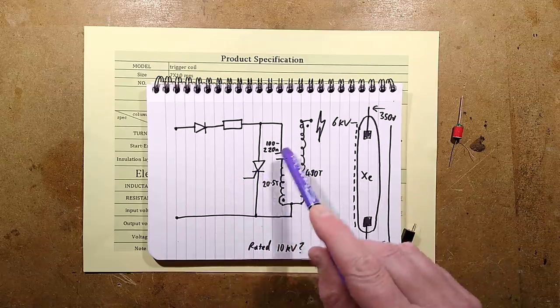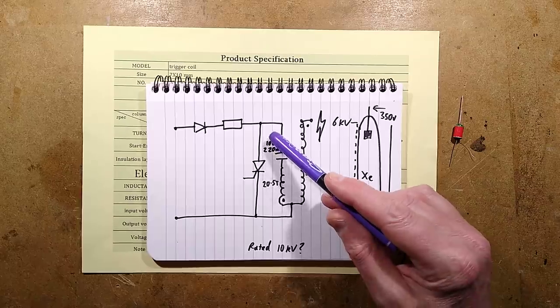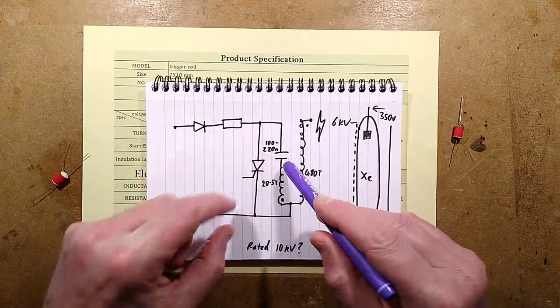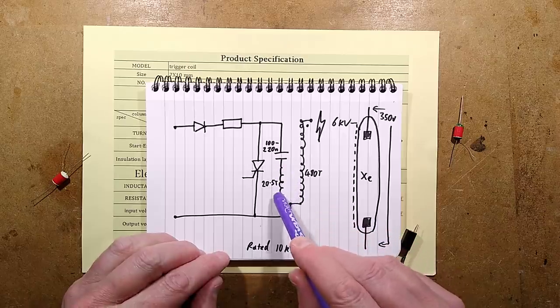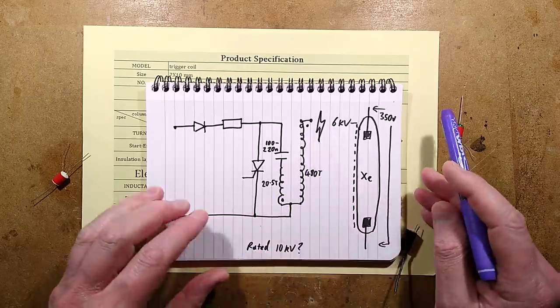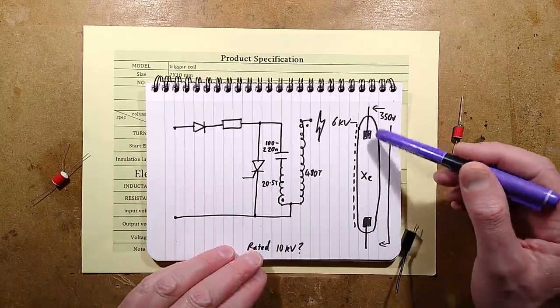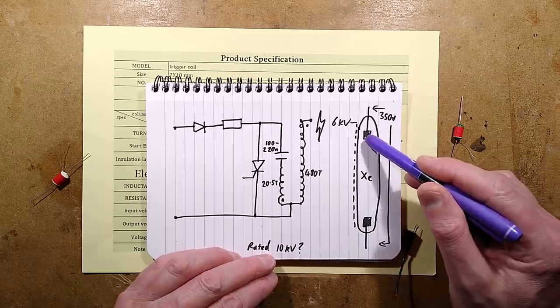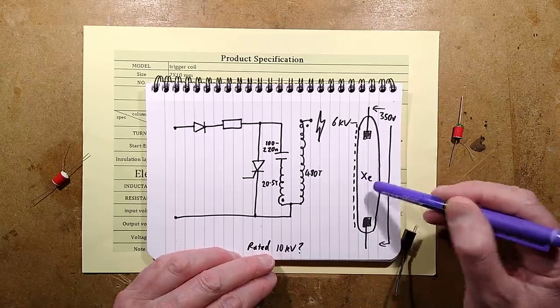When it reaches the desired voltage, this thyristor can be fired. When it shunts the capacitor and the coil through the thyristor, it causes a really high pulse of current in the primary, which then gets coupled across to the secondary and creates a very high voltage.